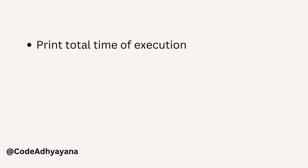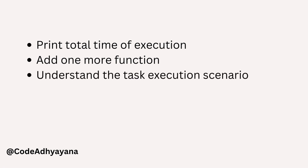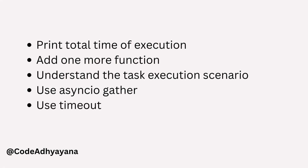Let's see what points we are going to discuss in this video. We'll start from the previous code we created for async task, then add logic to print total execution time, then add one more function to print x, y, z, and execute the code to see the gap in async task and how async gather can increase its performance. Finally we'll talk about timeout.